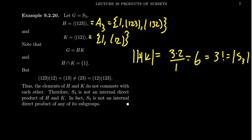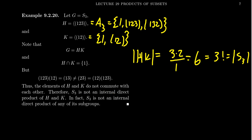Notice: (1 2 3)·(1 2) = (1 3), but (1 2)·(1 2 3) = (2 3). These two products are different, so H and K do not commute. Therefore S3 is not an internal direct product of H and K. This situation — product is the whole group, intersection trivial, but no centralization — is what one would call an internal semi-direct product, but that's a topic for another lecture.